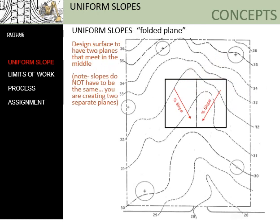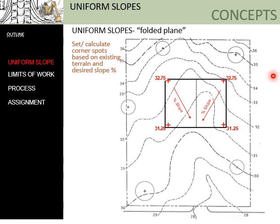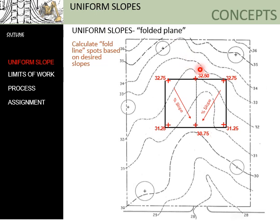We can also combine different uniform slope surfaces together. In this case, we have two uniform slopes angled towards one another, so water drains to the middle and out at the bottom. To calculate this, we set spot elevations at the outside corners — which are at the same elevation going across — and then establish our slopes going towards the center. Using slope calculations, we can determine what elevations will be at the center of this folded uniform slope, with one slope on each side like the fold in a book, and water draining down to the center.